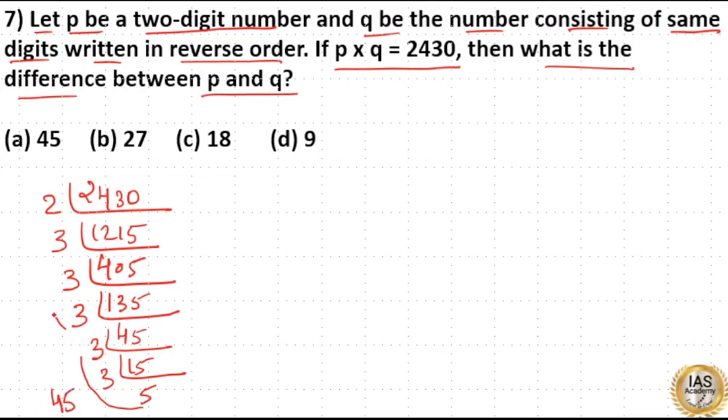Again, 3 cubed is 27, and 27×2 is 54. So the condition fits these numbers well. That is, 54 is the reverse of the digits 45.